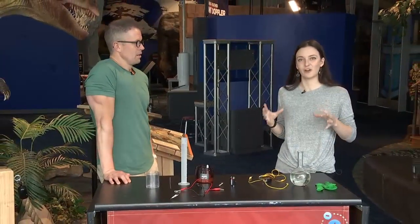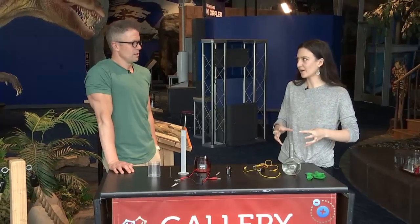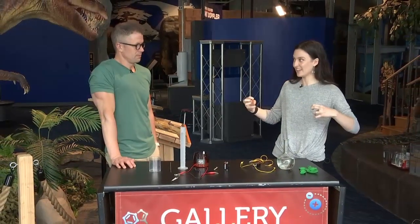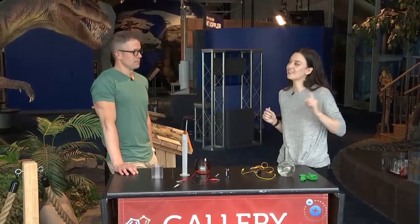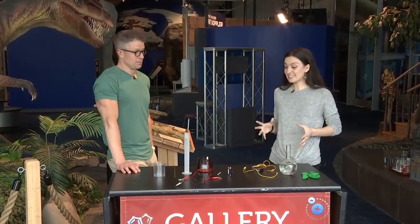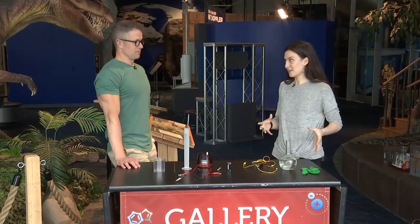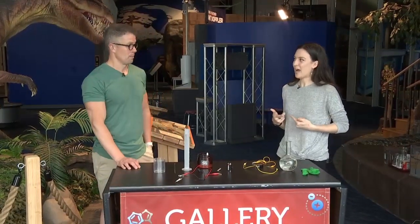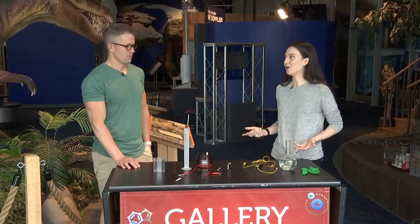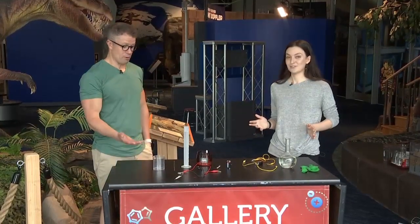So there's this process called electrolysis where you can take water and break it down into hydrogen gas and oxygen gas using a little bit of an electric current through it. And this is something that they do on the space station to help our astronauts breathe from recycled water. But it's also something you can try at home really easily. So we're going to try it right now.